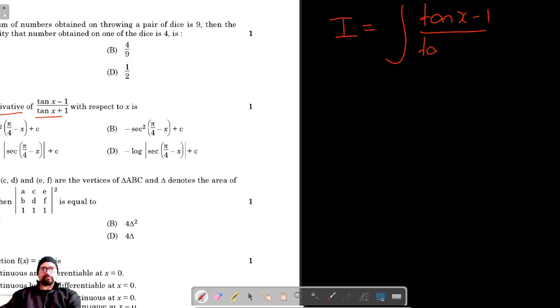Now this is equal to negative - I can take negative common. Let me convert this into some known form. If I take negative common, this becomes (1 - 10x)/(1 + 10x).